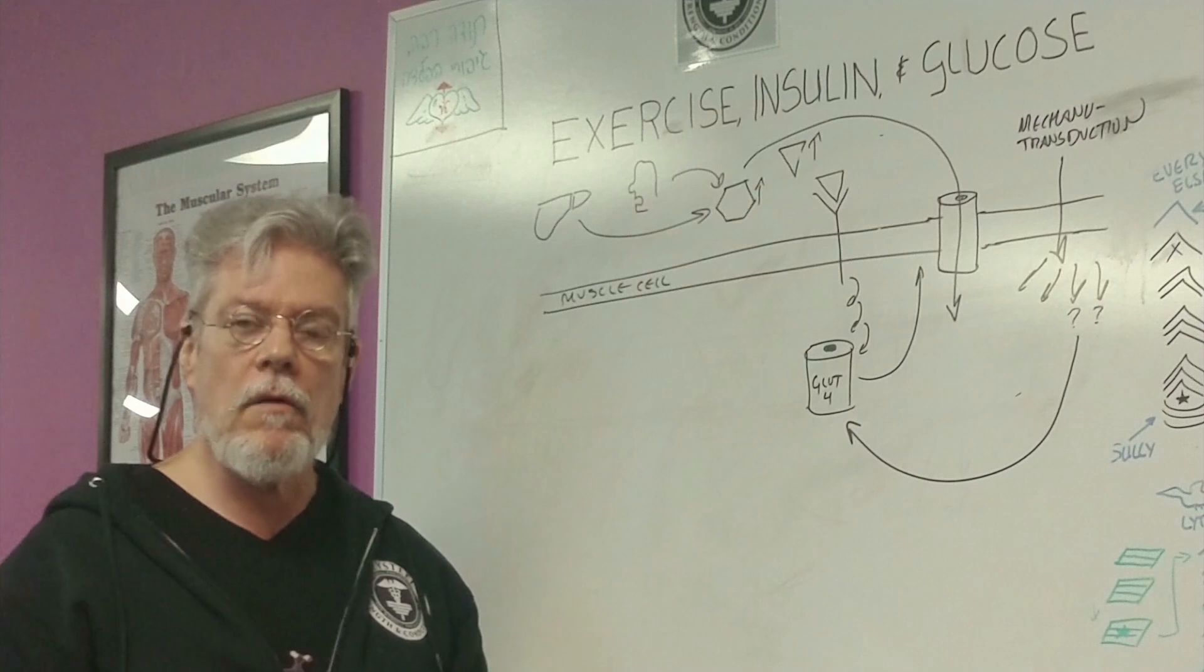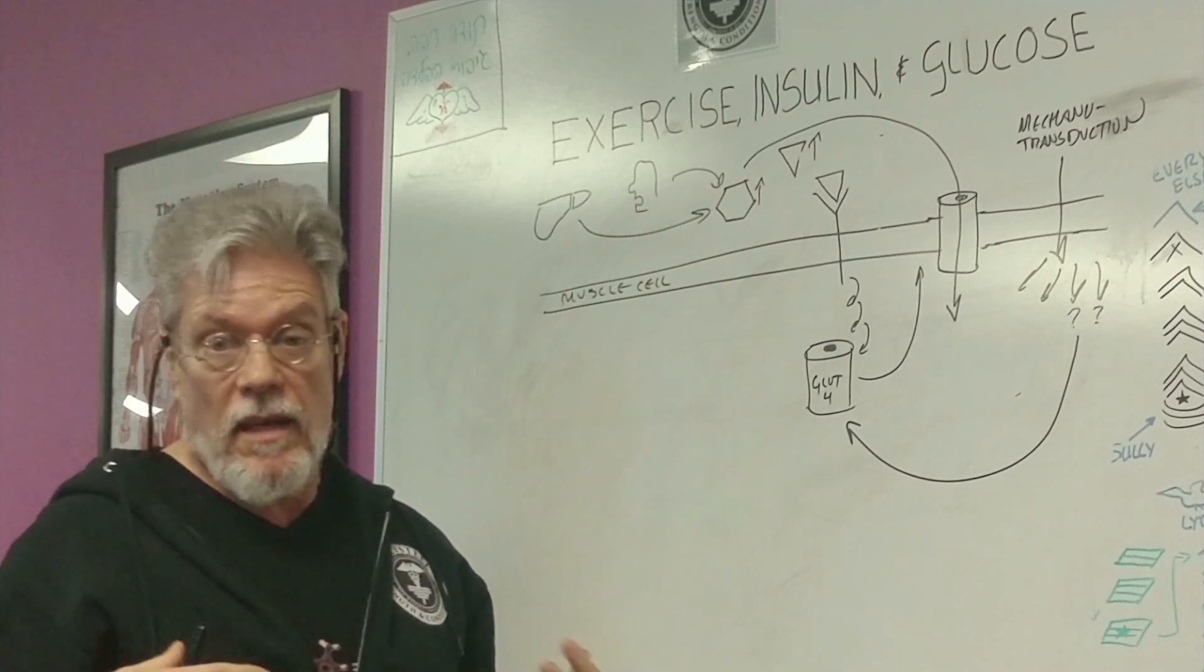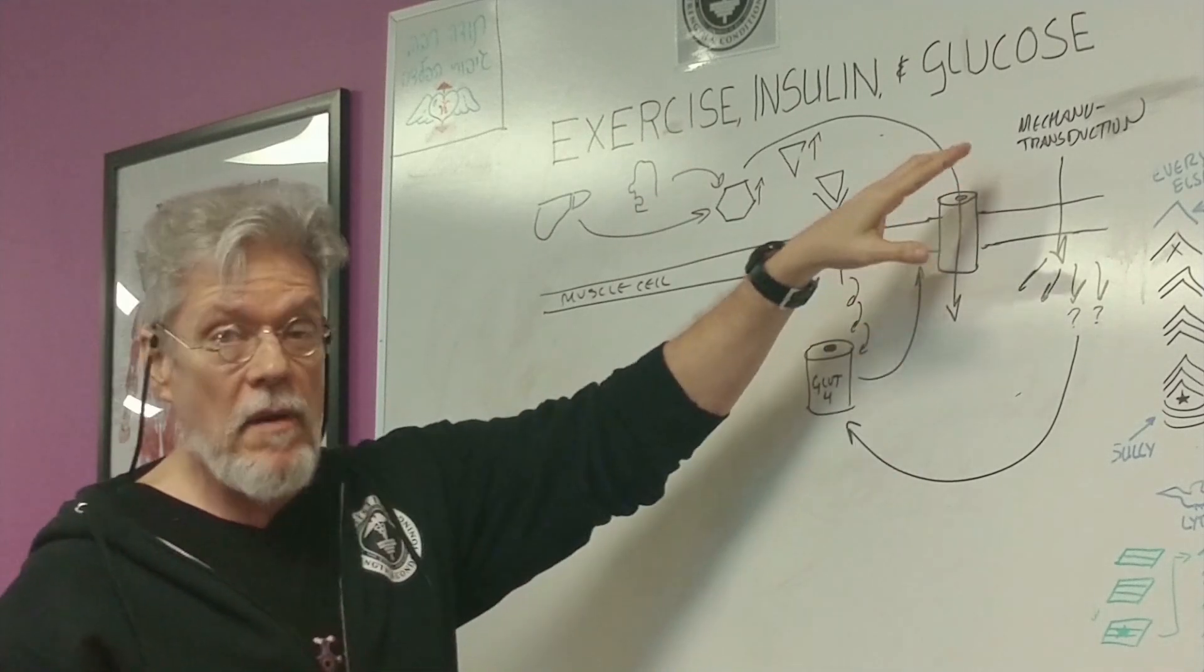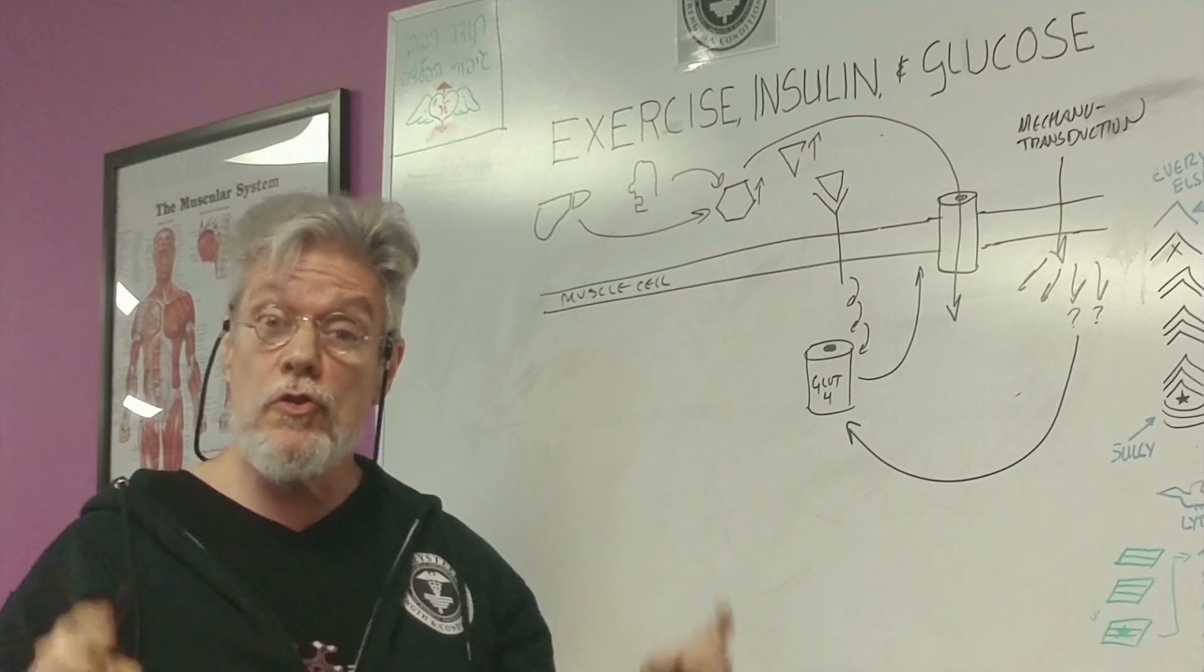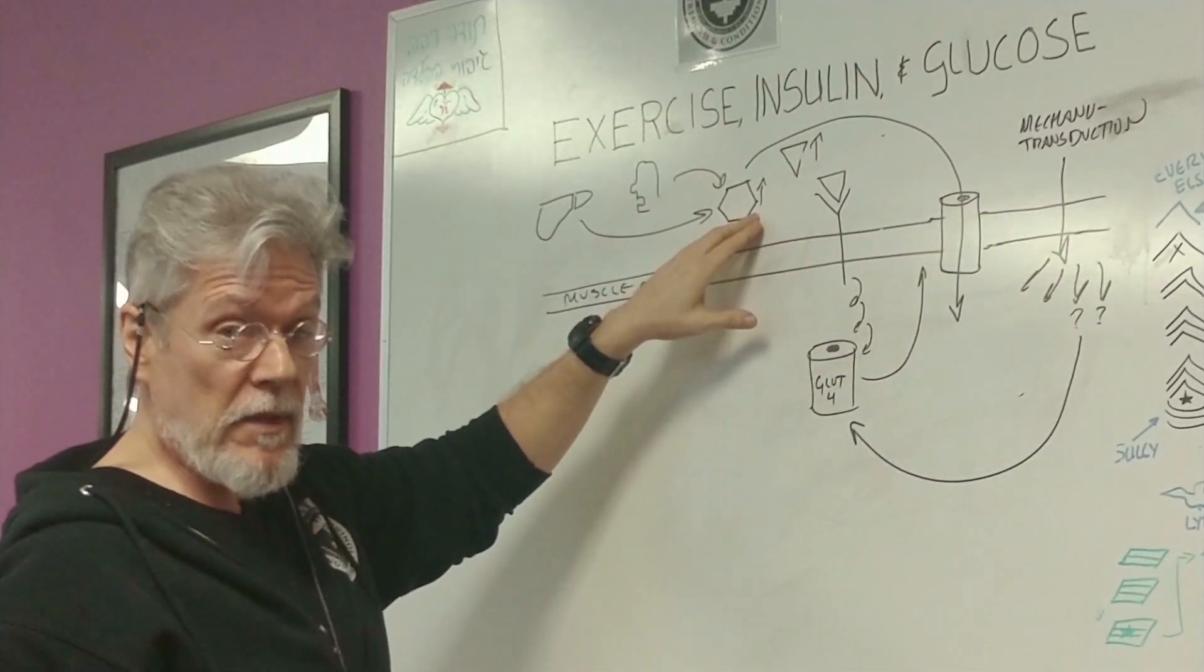Now, the implications of this are profound. Obviously, if you're on a hypoglycemic agent and you take insulin or some other agent that lowers your blood sugar, you've got to take that into account if you're also exercising, because now you kind of have two hypoglycemic agents on board. You have the exercise and you have the hypoglycemic agent itself.